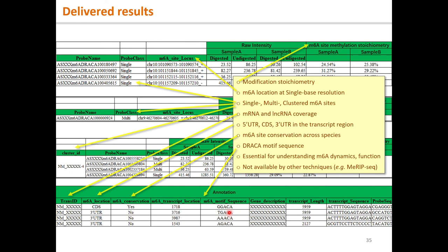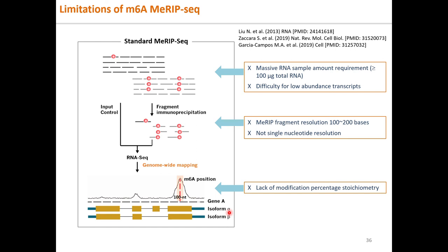As a comparison, conventional methylated RNA immunoprecipitation sequencing or MeRIP sequencing has many limitations. It cannot measure the modification stoichiometry or the percentage of modification, which is very important information in M6A epitransitomics. It is also difficult to profile M6A modification on less abundant RNA transcripts or transcript isoforms due to the much lower quantification sensitivity of RNA sequencing. Furthermore, MeRIP sequencing requires massive amounts of RNAs — greater than 100 micrograms — which is not practical under many circumstances. Also, the M6A site resolution is about 100 bases by MeRIP sequencing compared with single-base resolution by ArrayStar MAZF single-nucleotide resolution microarray.